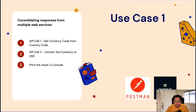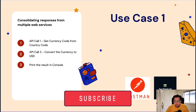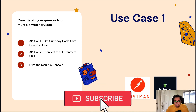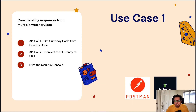In the first use case, I'll be calling an API where, if I provide the country code, it will give me the currency code. Then I'll be using that currency code to convert that currency to USD and finally print the result in console.